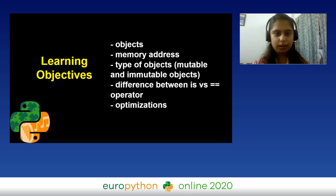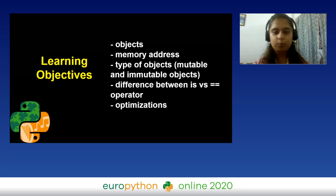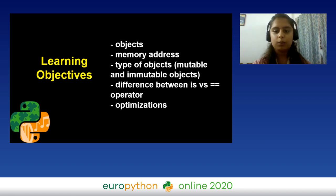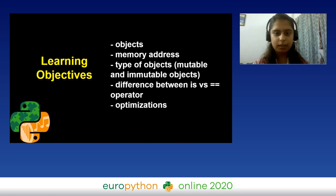The learning objectives for this talk include: what is meant by an object, what is meant by memory address, types of objects — that is mutable and immutable objects — then we'll cover the `is` versus the comparison operator, and then an interesting topic: memory optimizations in Python.